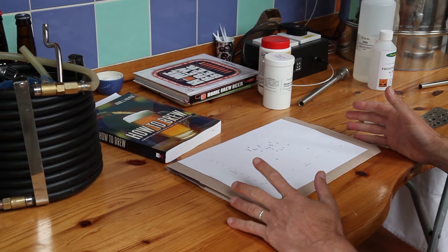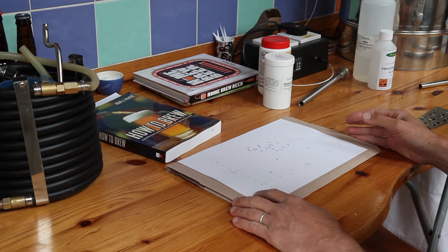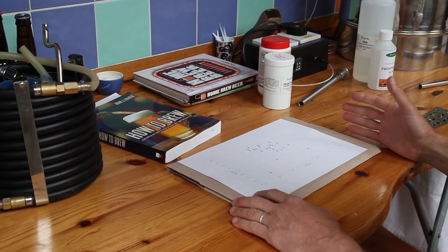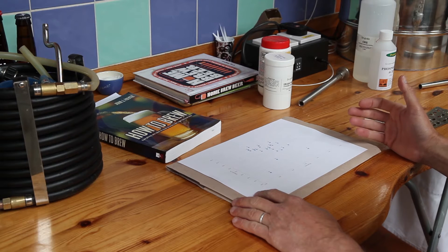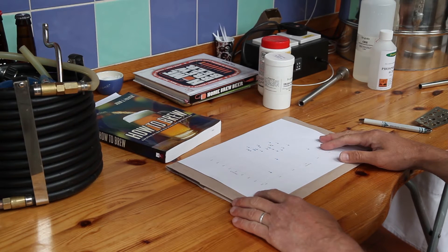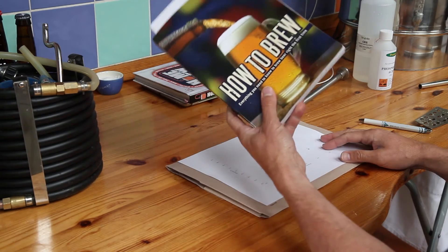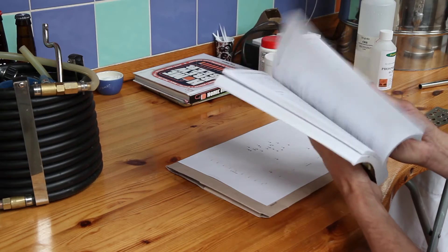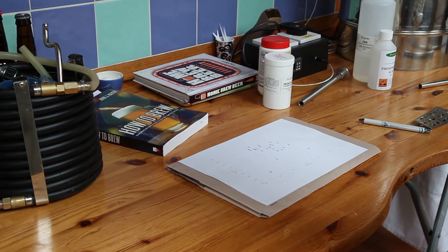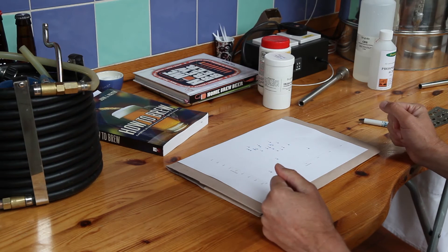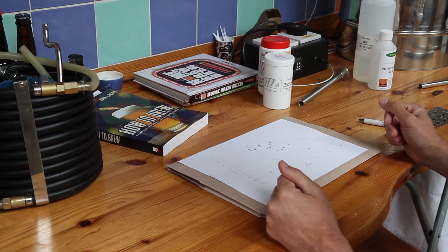Efficiency refers to the extent to which you get as much sugar out of your ingredients as, in theory, you should be able to get. Every ingredient that we use has a theoretical maximum yield that has been calculated. You can find them in books like John Palmer's book. But the easiest thing to do is put your recipe into Beersmith or something like it and it will calculate your expected yield based on the ingredients that you've used.